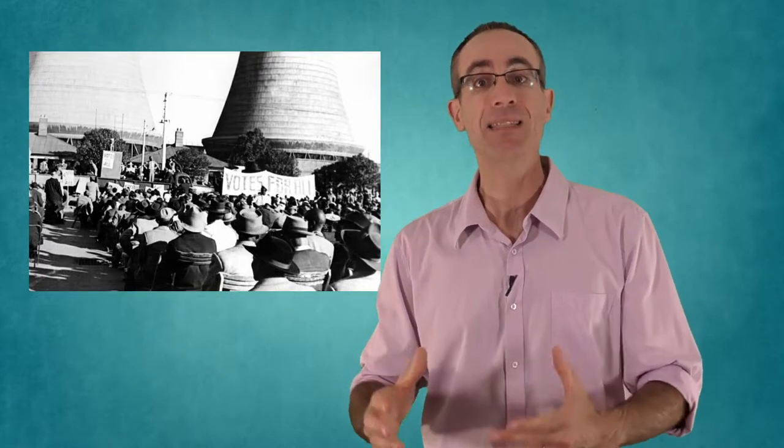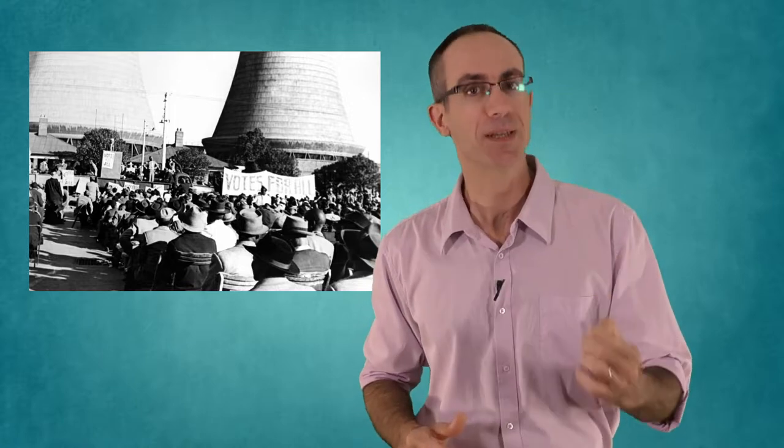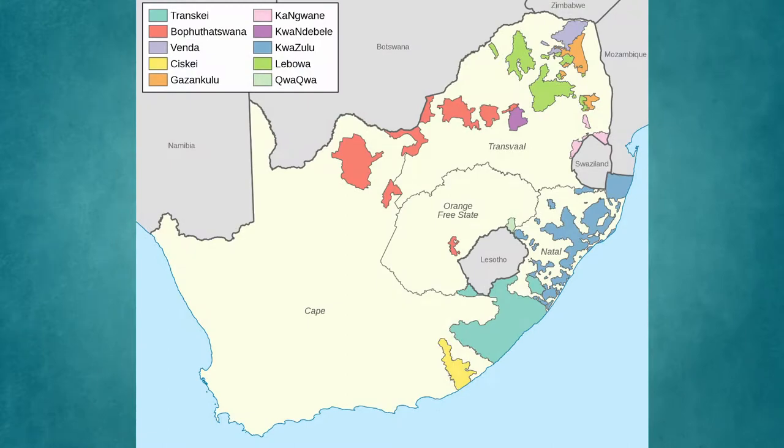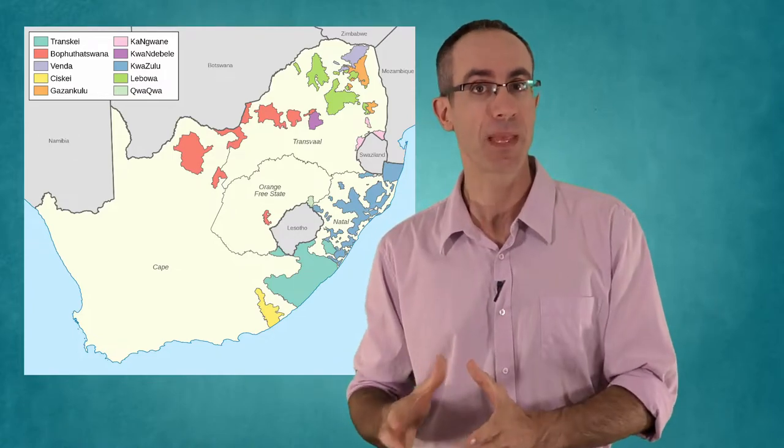White people, only, were counted as citizens of South Africa, whose rights were protected by the rule of law and could participate democratically in the national decision making. The blacks were politically excluded, but the way they were excluded is of particular importance. The white government declared ten remote areas as states of the blacks, each supposedly belonging to a different tribe. Each black person in South Africa, regardless of where they actually lived, was no longer a citizen of South Africa but of one of those new fictitious homelands.